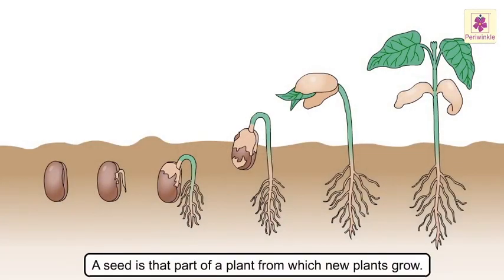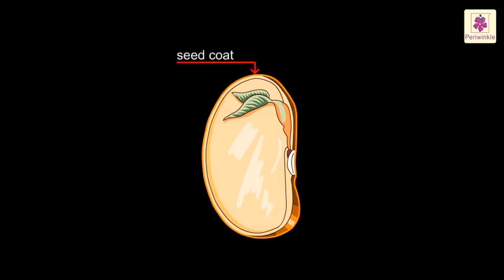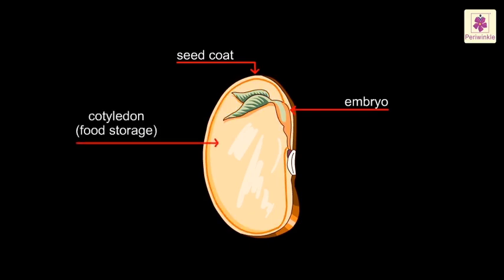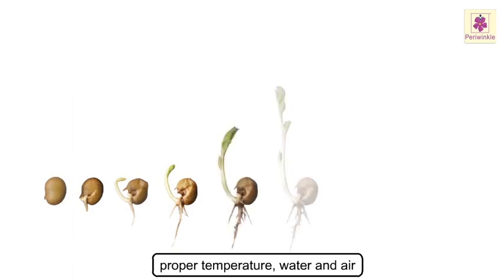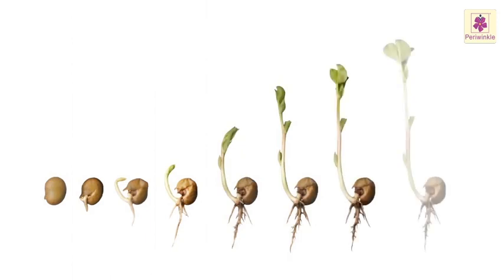A seed is the part of a plant from which new plants grow. The outer covering of a seed is called the seed coat. Every seed has a tiny plant inside it called an embryo. It also stores food to help the plant grow — this food is used to keep the embryo, a partly developed plant or seedling, alive and to give it energy to germinate. When the seed gets the right conditions — proper temperature, water, and air — it starts to develop into a tiny seedling. This first stage of growth is called germination.